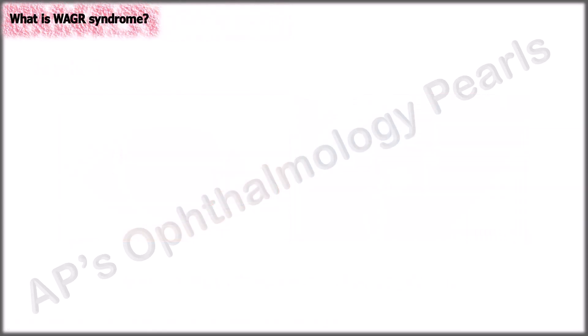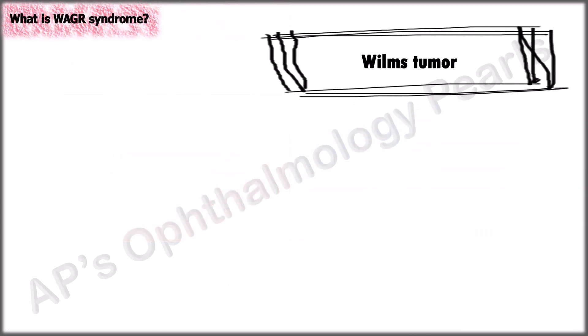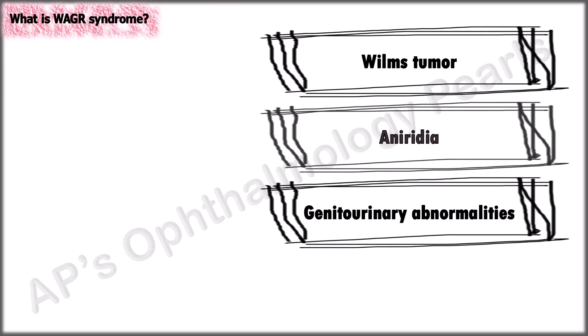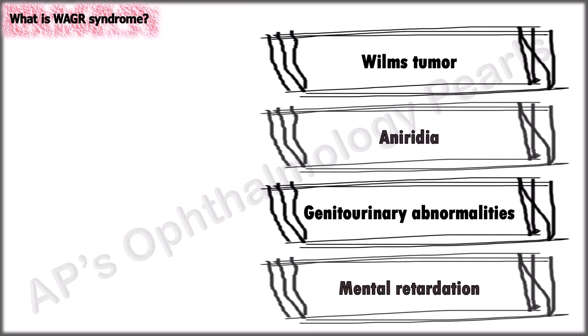WAGR syndrome is an acronym for Wilms tumor, aniridia, genitourinary abnormalities, and mental retardation, and can be used even when there is aniridia with just one of the other conditions. It involves a deletion in PAX-6 and WT-1, the Wilms tumor predisposition gene.